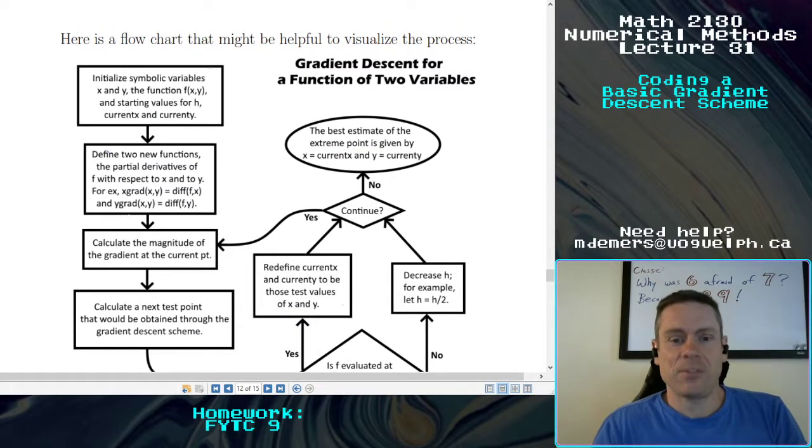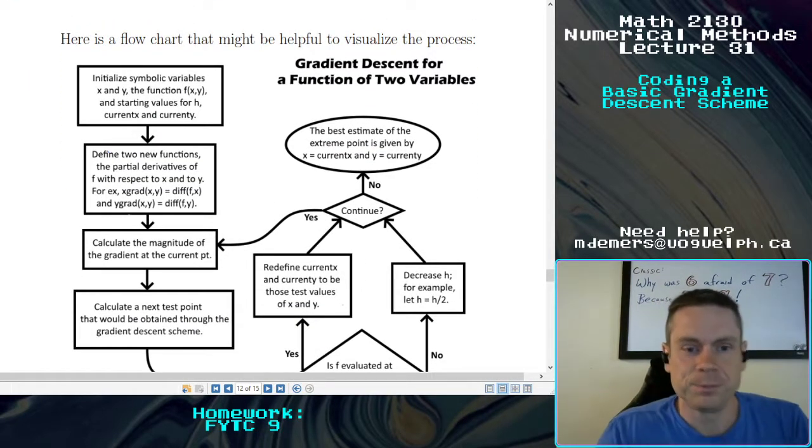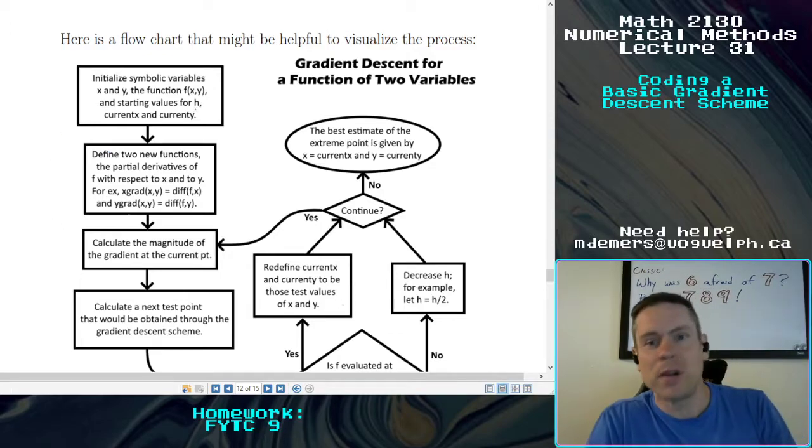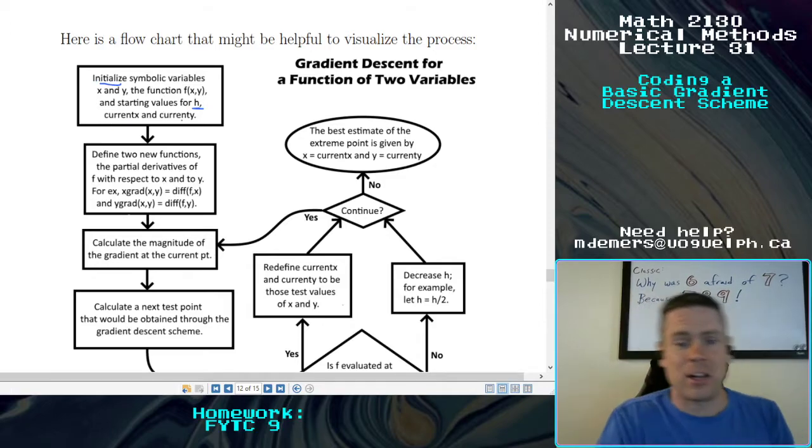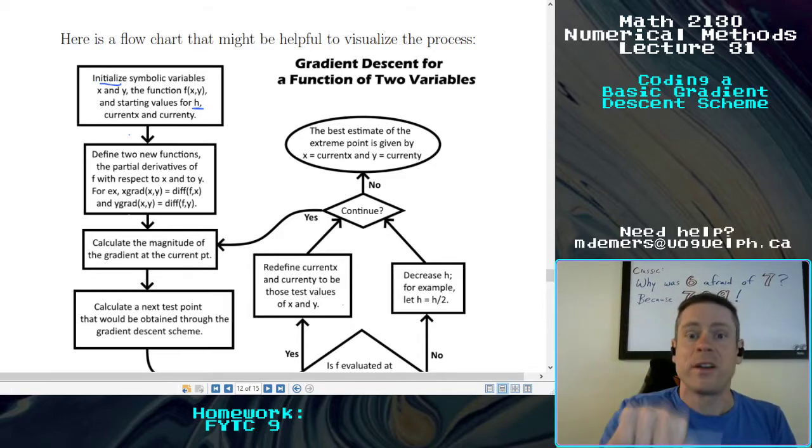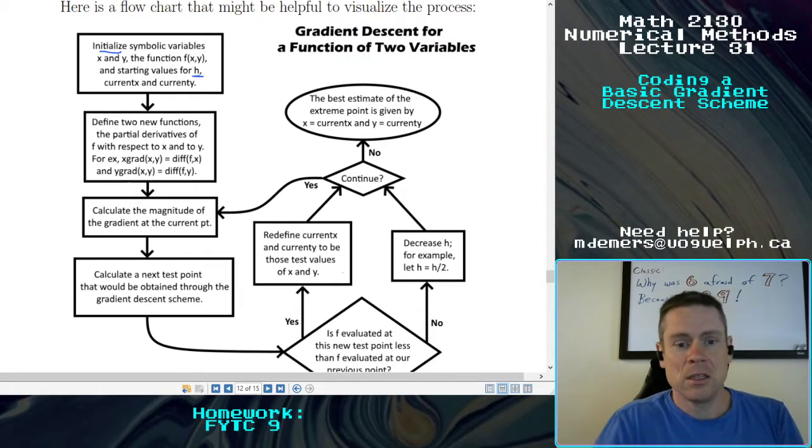So let's look at this. It's a flowchart here. And this is really where we're starting. It's just kind of putting what we just talked about into a graphical format here. But we want to initialize first. We have symbolic variables, the function f of x and y, and our starting step size of h. I'll typically use a current x and a current y that give me the current point I'm at. And that's going to be what updates as we go along.